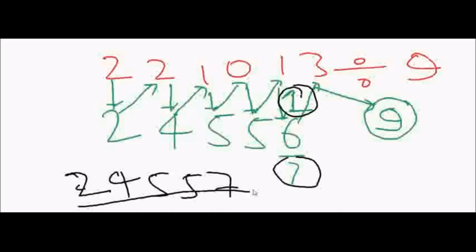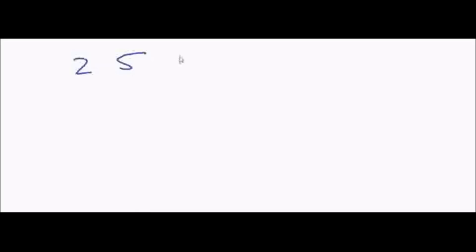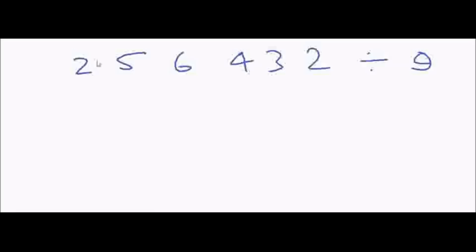I think you understood that, so let's take another example with any random number. Let's say we take the number 2 5 6 4 3 2, and we have to divide this number by nine. Using the same trick, let's try to write the answer. We write the 2 as it is.